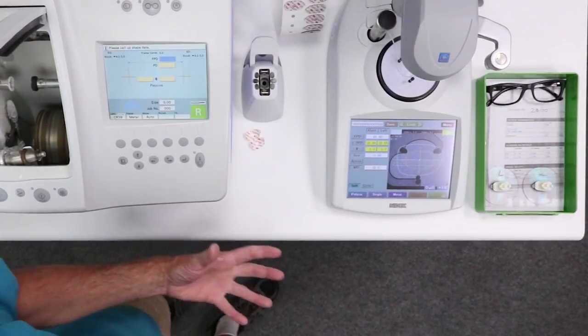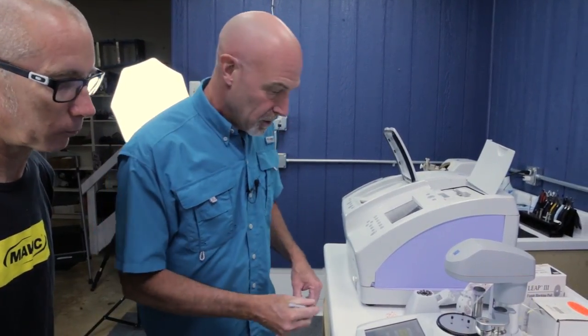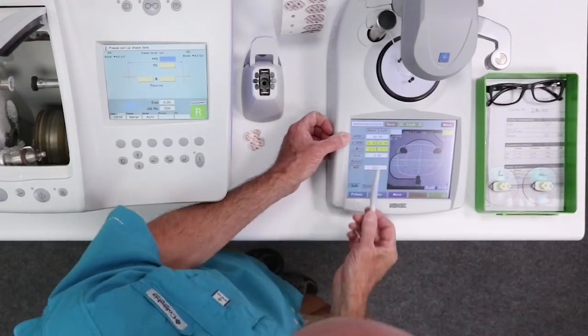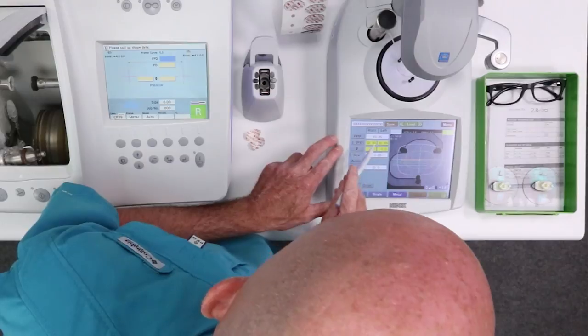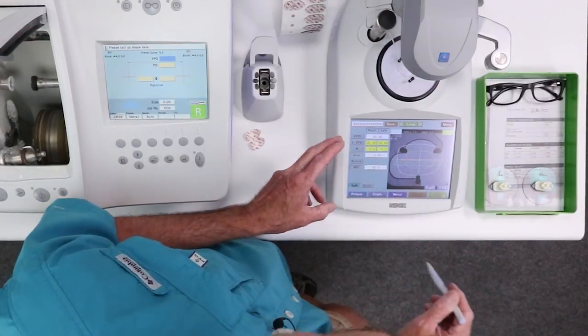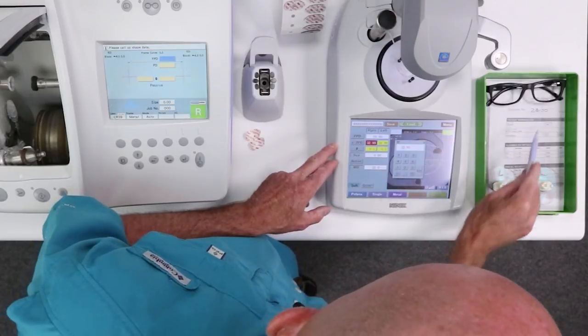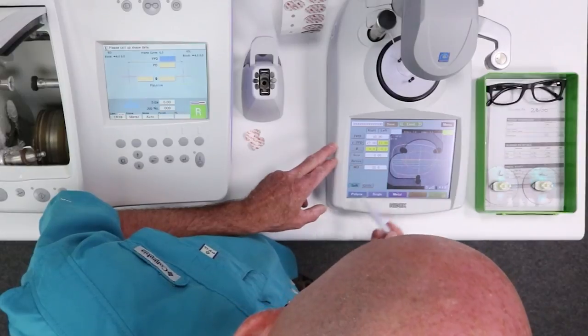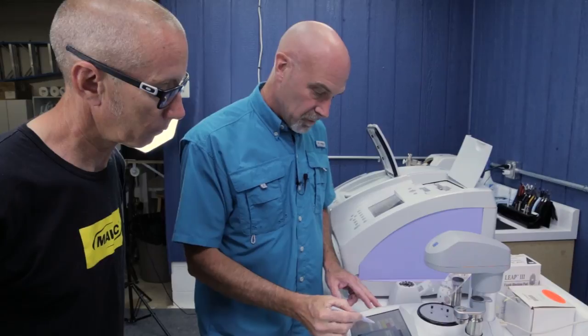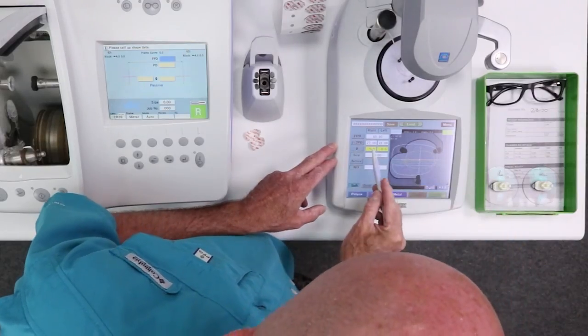All right. Now we have to tell the edger two things. One, we have to tell it about the lenses. And we have to tell it about you. So the first thing up here, we have our frame PD. That's this. And it knows everything about that now because we did the trace. Next, we're going to have to do your pupillary distance. And we're going to, you will come up at 27 because we're doing an intermediate for you. Enter. And 28 because your one eye is a little bit more over than the other. We won't make fun of you or anything, I swear. Okay. So we got 27 and 28.